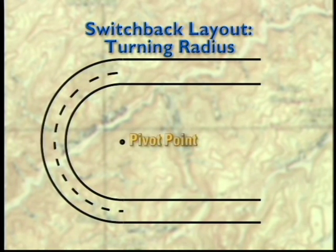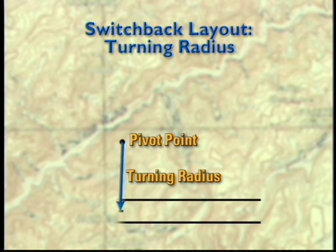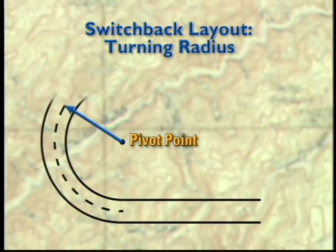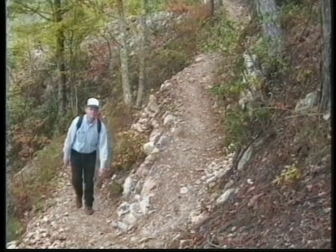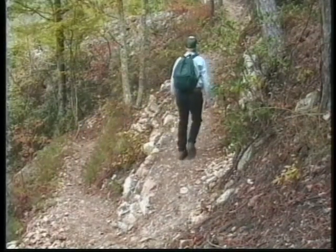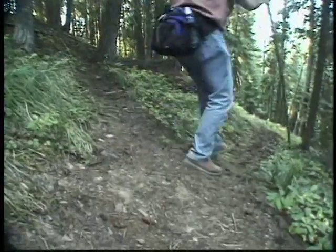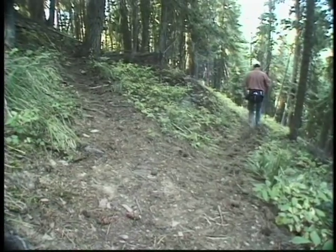Turning radius is an important concept you'll need to understand. Think of a turning radius in terms of drawing a pencil line with a compass, like you did in grade school. The point of the compass, or the middle of the circle, is the pivot point. The turning radius is the distance from that pivot point to the center line of the trail as it circles around and changes direction, usually in about a half circle. Normally, a switchback turning radius of two to four feet and a trail grade of not more than 15 percent allows hikers to move at a steady pace.